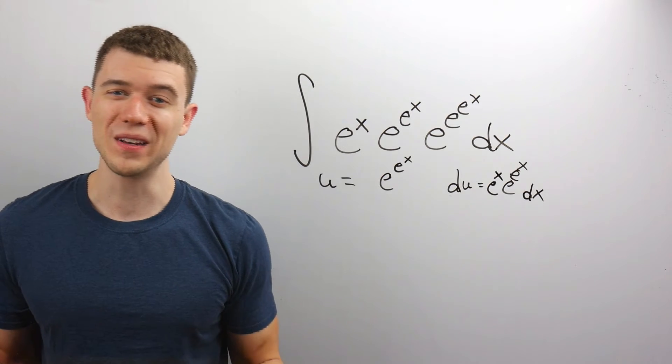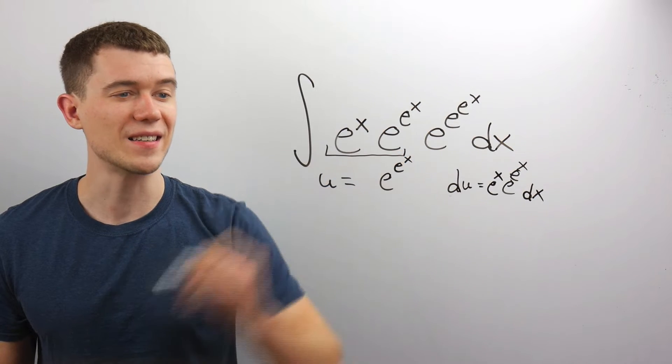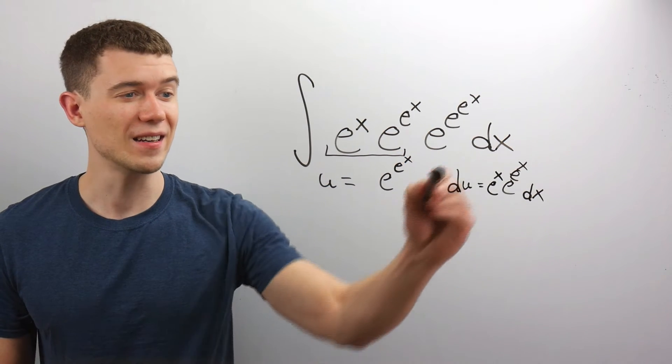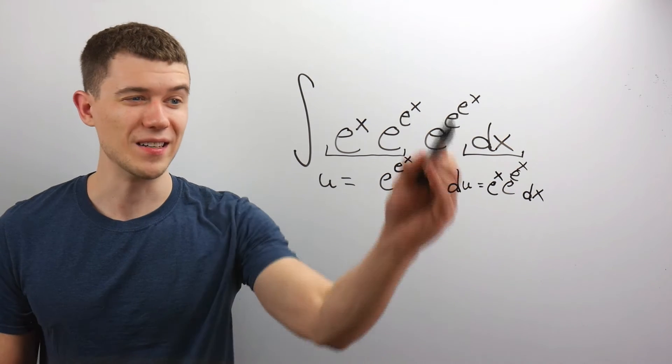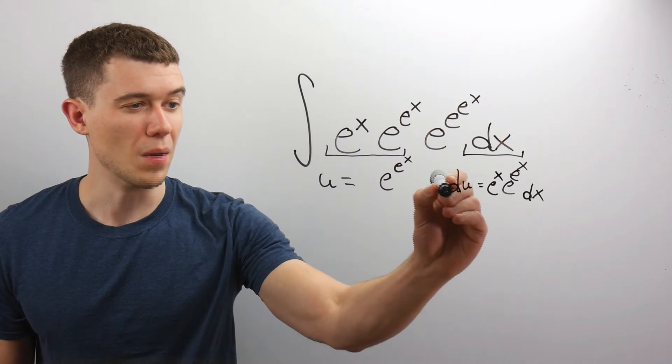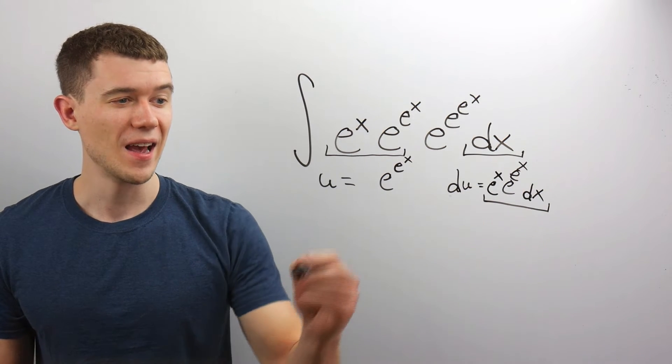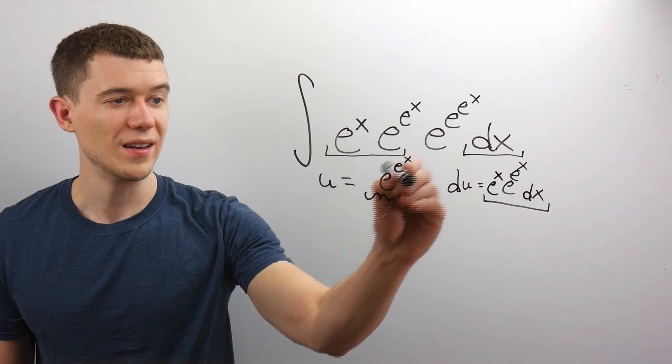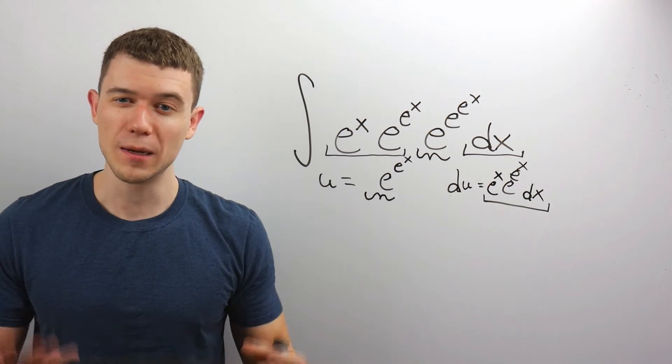Hey, this is working out nicely because I have e^x times e^(e^x) and dx in my integrand. So my du exactly matches this, and my u exactly matches this, so I can just do a single substitution.